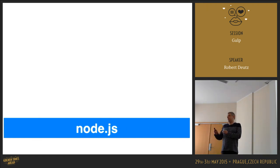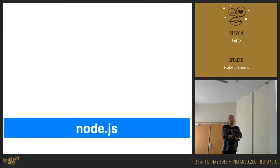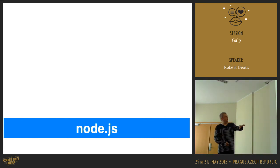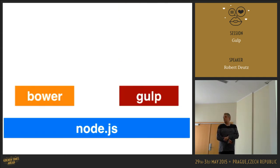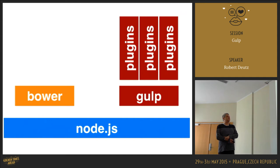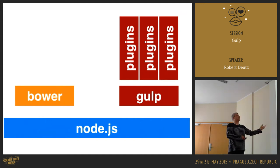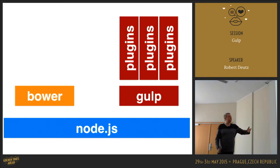Let's look about the task runner, about Gulp. We have Node.js, and then we have Bower on top of it, and we have Gulp. Gulp is extendable with plugins — everything is extendable with plugins. That's great, it's something we know about.